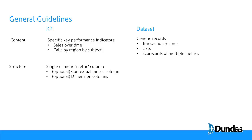A KPI within Dundas is a single numeric metric column, which is then paired with optional contextual metric columns — which are targets — and dimension columns, which are filters or axes, etc. So we're looking at one metric with a possible target and multiple axes or splitters. Whereas a data set is simply a group — it's any number of columns of any type. So you see, even in structure they differ quite a bit.